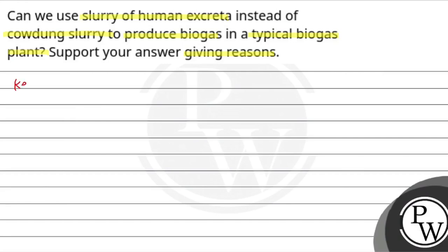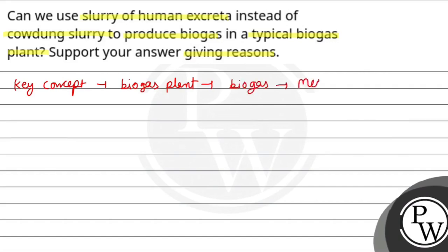Let's see the key concept here. We should firstly know about the biogas plant and what biogas is. How is biogas produced? Biogas production mainly involves a bacteria called methanogens. Where are they present? They are present in humans and cattle.